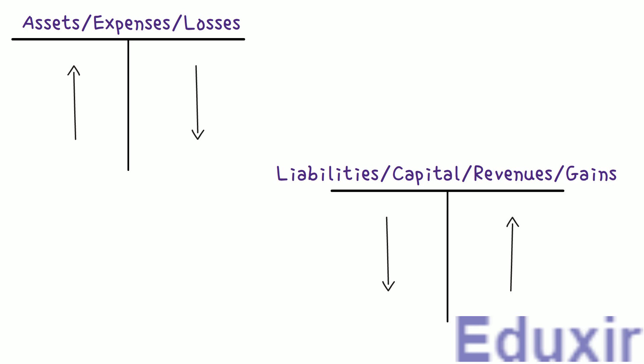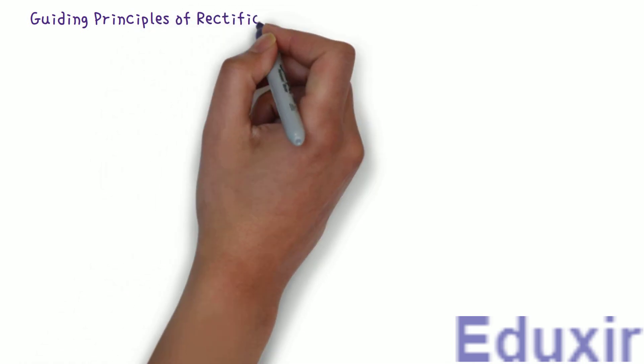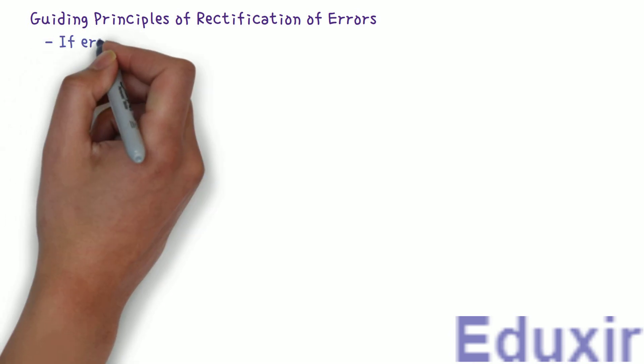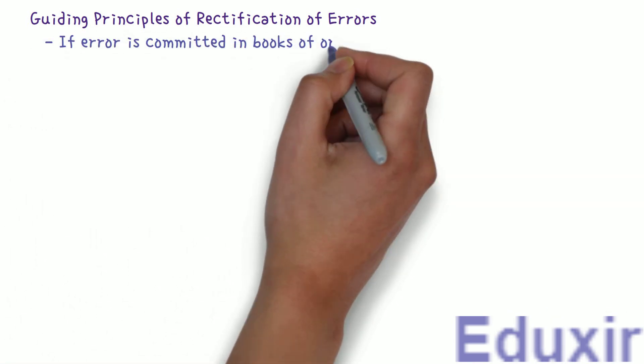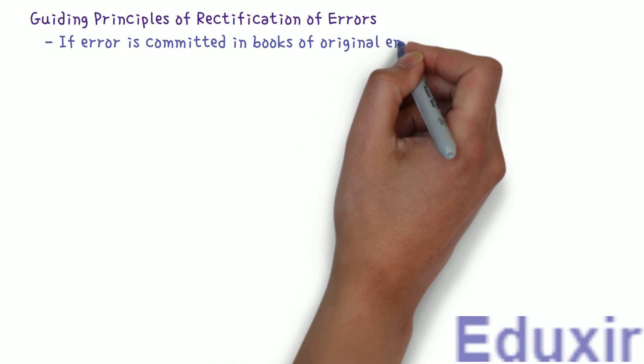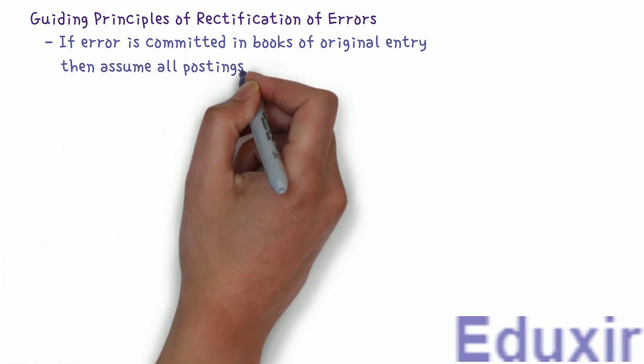To rectify the errors in this problem, we need to recall a few of the guiding principles of rectification of errors. One of the guiding principles is: if the error is committed in the books of original entry, then assume all postings are done accordingly.